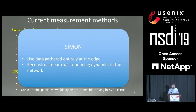Our work, Simon, falls into the edge-based measurement category. We use data gathered entirely at the edge of the network. However, we try to reconstruct the near-exact queuing dynamics in the network, in addition to the queuing distributions.